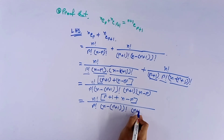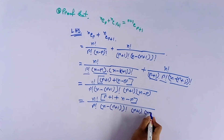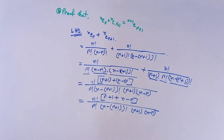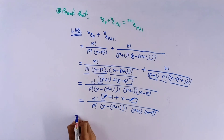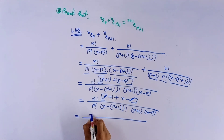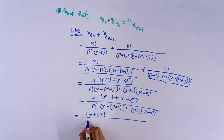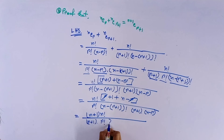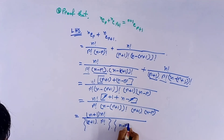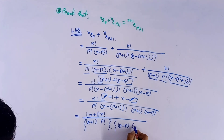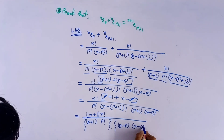The denominator is r factorial times (n minus r plus 1) whole factorial times (r plus 1). Simplifying further, we get n factorial by r factorial times (r plus 1) whole factorial times (n minus r plus 1) whole factorial.